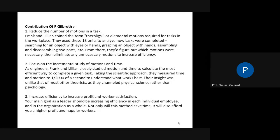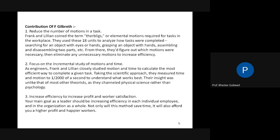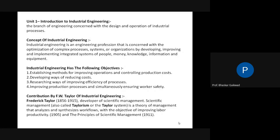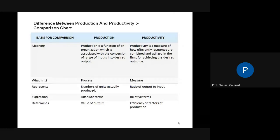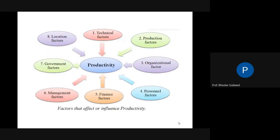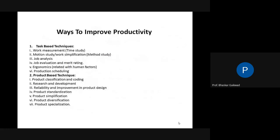Two scientists, F. Gilbert and F.W. Taylor, made key contributions. Taylor's work is related to method study and Gilbert's to motion study. We also discussed the difference between production and productivity, productivity factors, and how to improve productivity — including task-based techniques, which form the core of our Industrial Engineering syllabus.